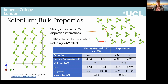The first step of course is to ensure that we have an accurate model of our host material. Selenium has this atomic chain-like structure which follows a trigonal helical pattern as we look down the chain axis. As we'd expect for a low-dimensional and also pure covalent material — i.e. no electrostatic or ionic bonding — we have strong inter-chain van der Waals dispersion type interactions, which contribute to approximately a 10% volume decrease for the material. Using hybrid density functional theory with van der Waals dispersion corrections, we find very good agreement between the calculated bulk properties and experimental measurements.